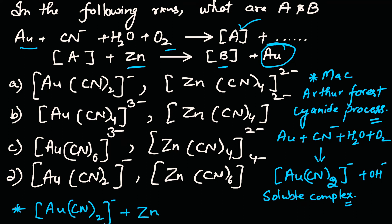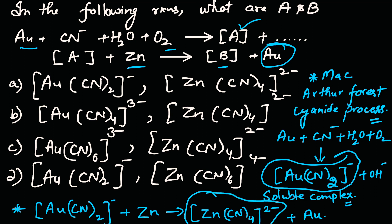In this way we extract gold. These two ions - this is our A and this is our B that is asked in the question. So A is our correct option.